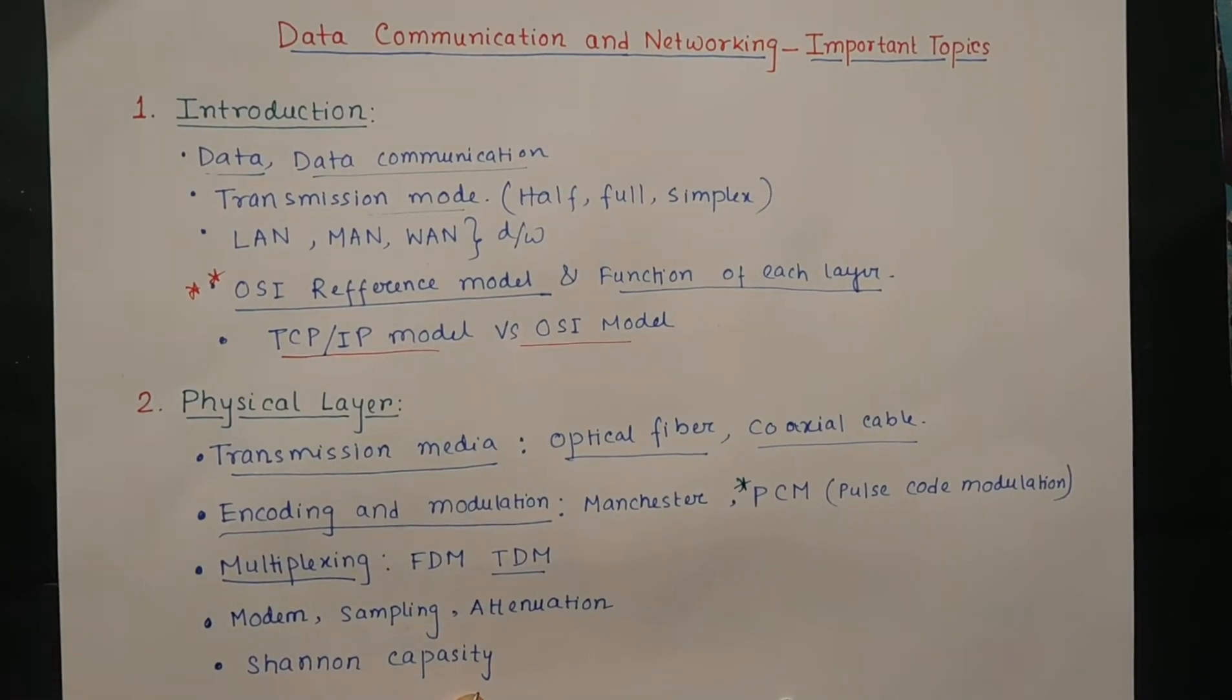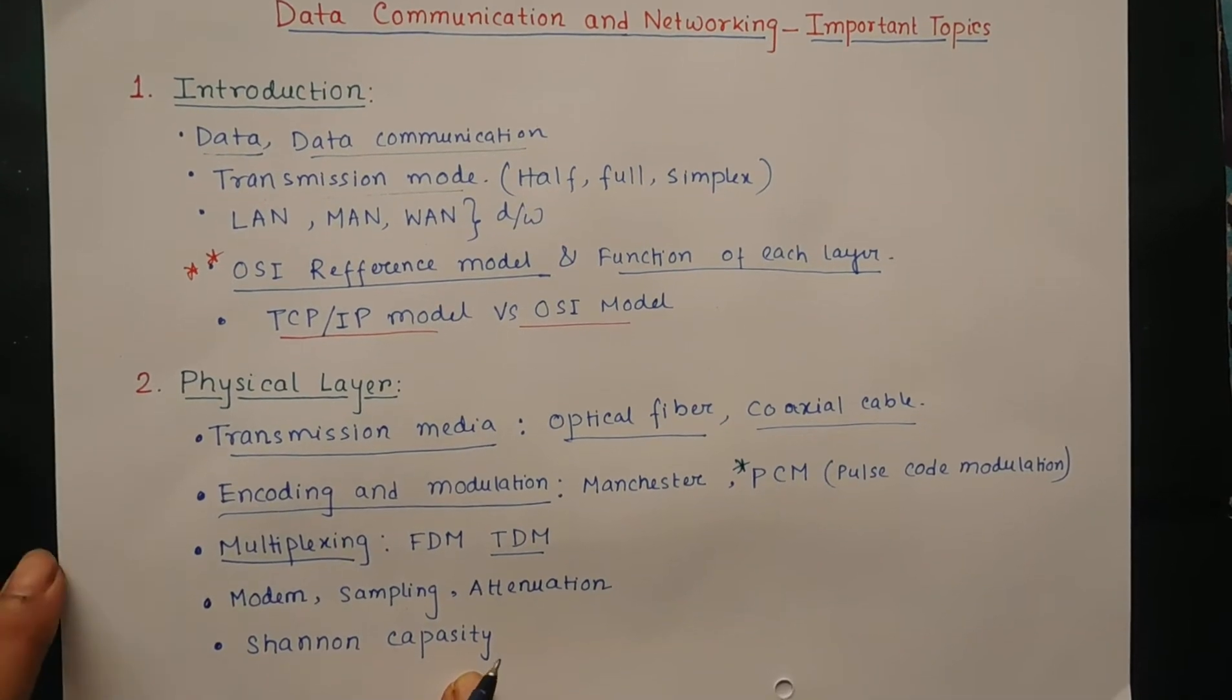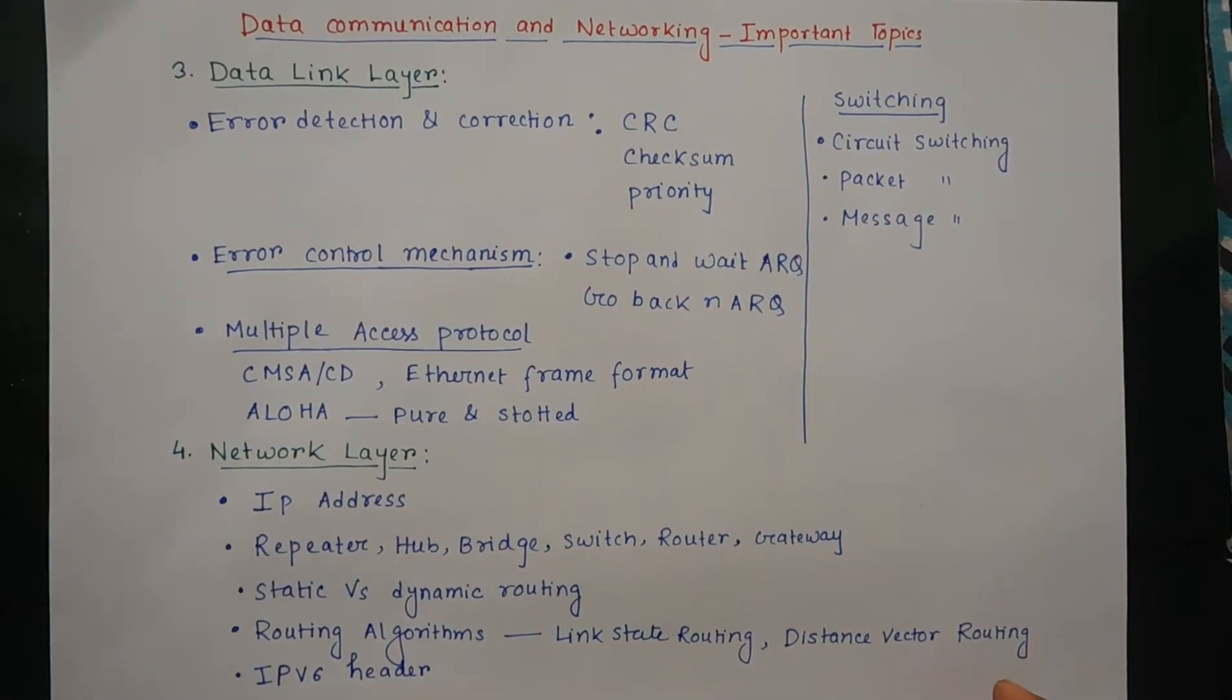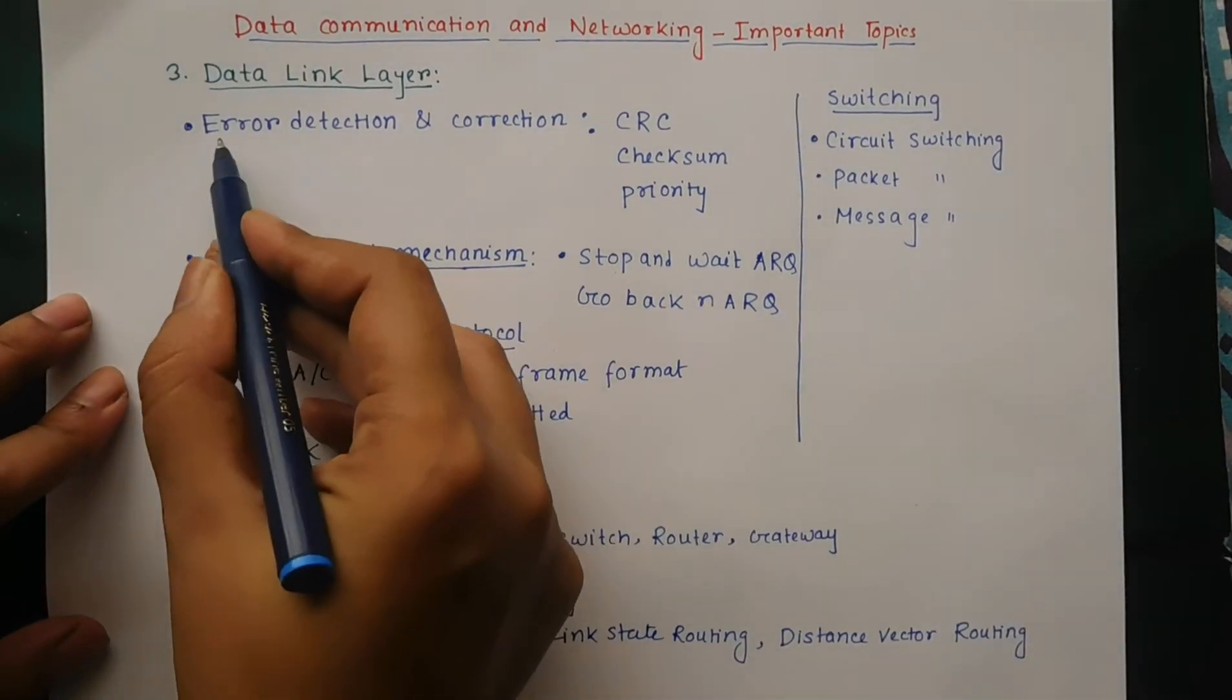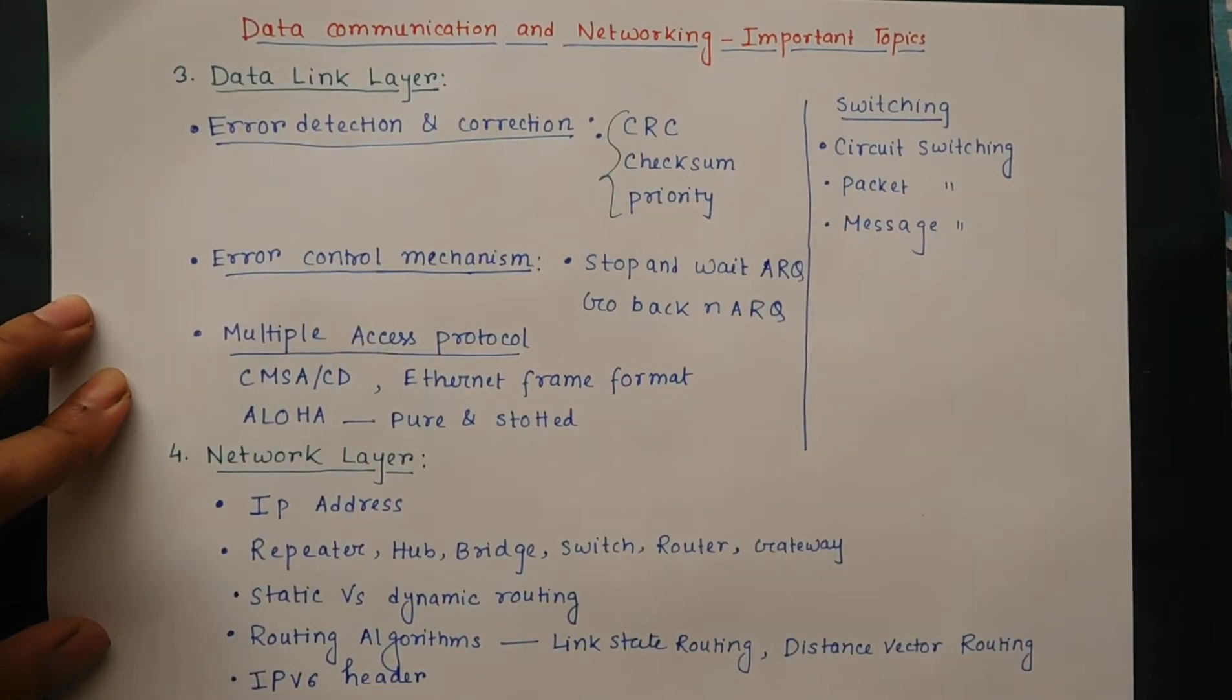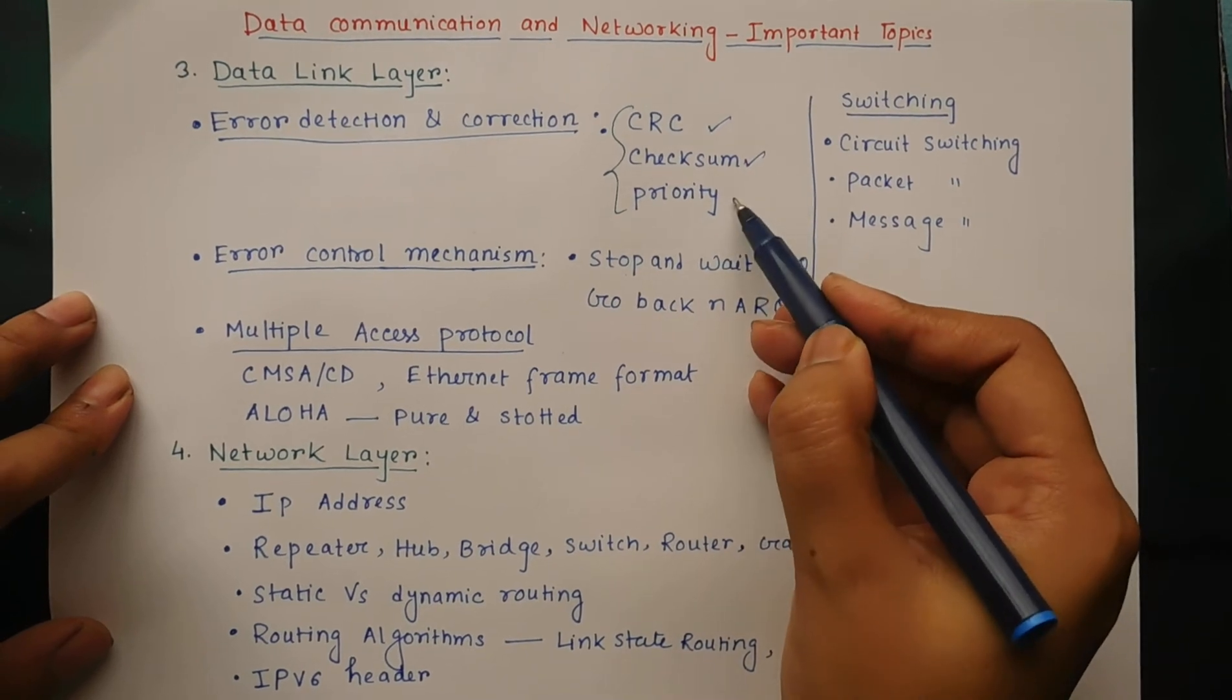This is a formula to determine the highest data rate for a channel. The next layer is data link layer. Here we have to read error detection and correction and the mechanisms. Important mechanisms are CRC (cyclic redundancy check), then checksum and parity.